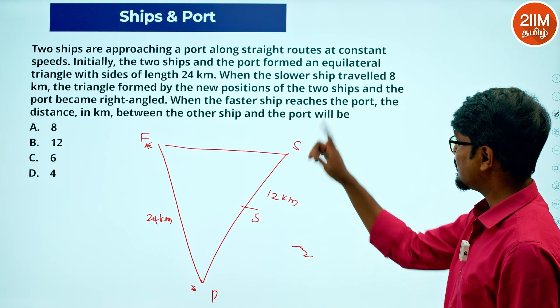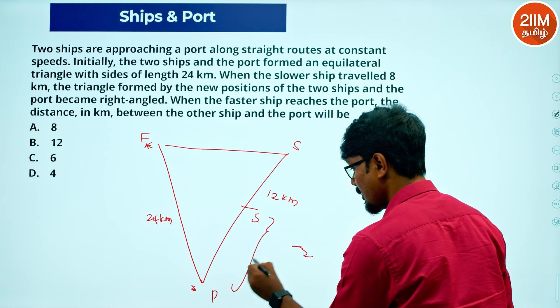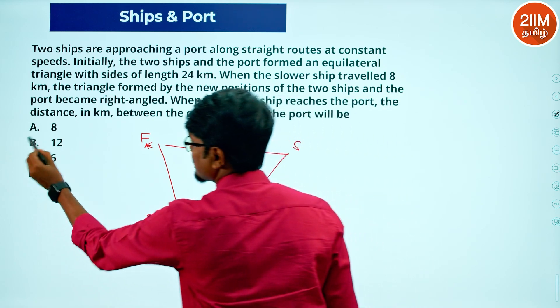The slower ship will be here. The question is, the distance between the other ship and the port—what is this distance? 12 km. Answer is there.